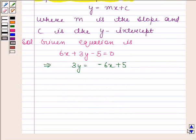This implies y equals minus 6 by 3 times x plus 5 by 3. This simplifies to y equals minus 2x plus 5 by 3.